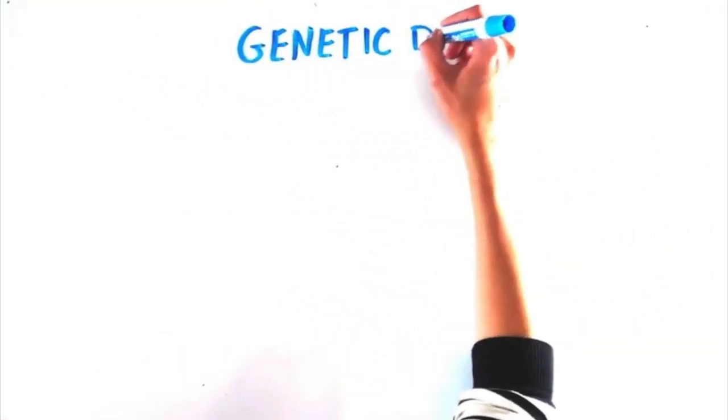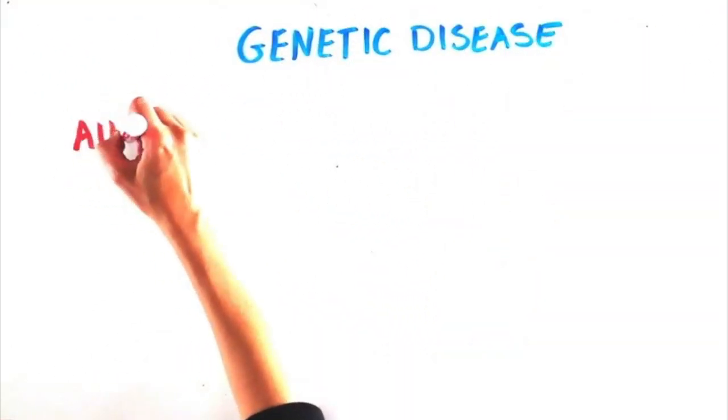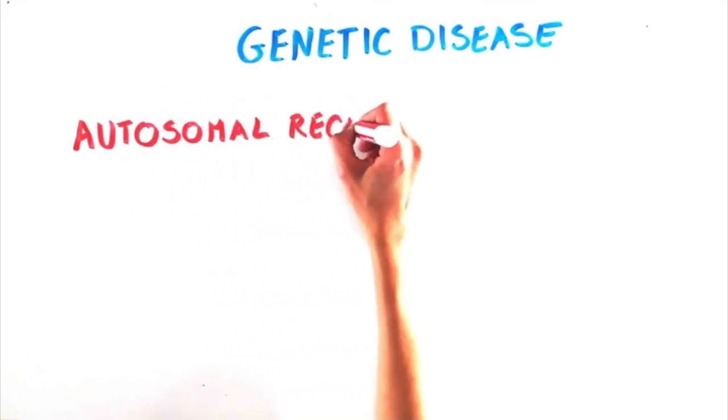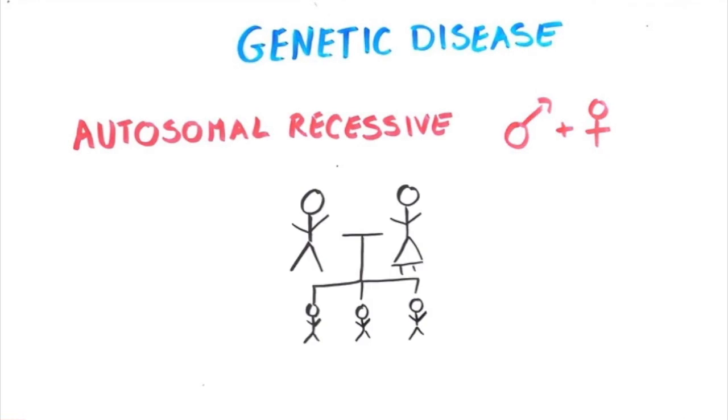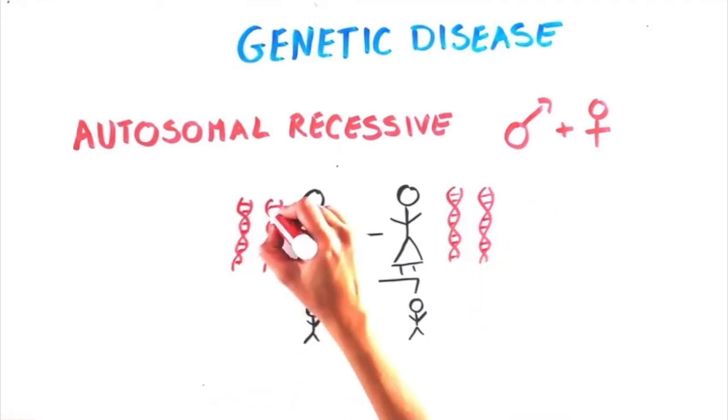Genetic diseases can be passed on in many ways. One common type of genetic inheritance is autosomal recessive, which means both men and women can get the disease, and both parents have to be carriers of the defective gene in order to pass it on to their child.